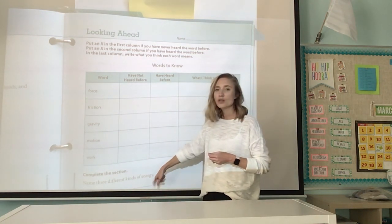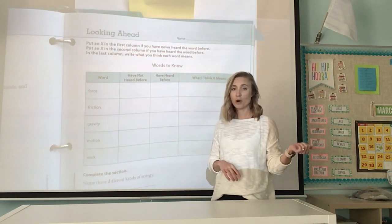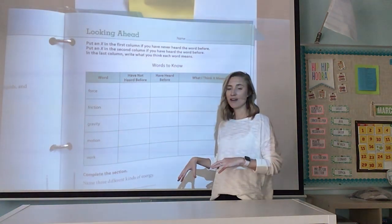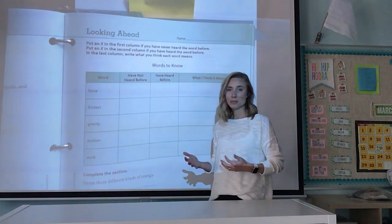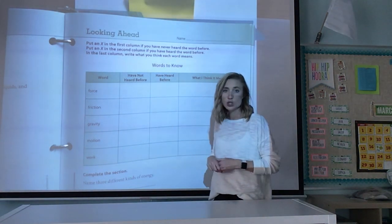The last thing I want you to do is I want you to name three kinds of energy. You might be able to do this from our chapters before. You might not. I want you to see what you remember. Put it down. Then as we go on in the chapter, we're going to see if we were right, if we were wrong, or if we need to make changes.